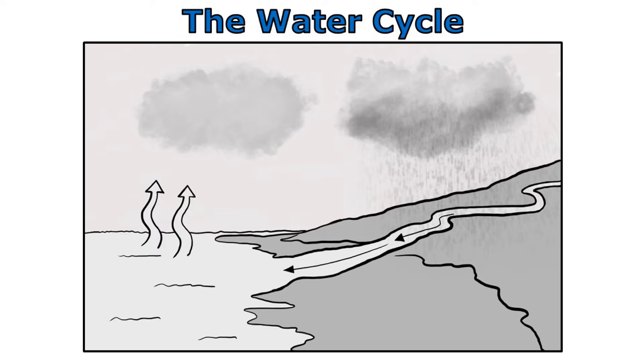There are four main steps to the water cycle that you need to be familiar with. First, water evaporates, changing from liquid water into water vapor that goes into the air.